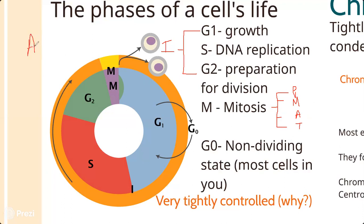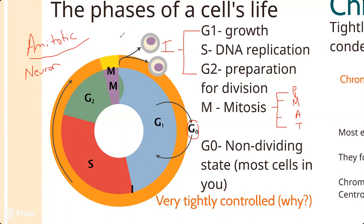Some cells are amitotic - meaning they don't do mitosis. Amitotic cells exit the cell cycle and remain in what we call the G0 (G-naught) phase, a non-dividing state. These cells hang out in an interphase-like state doing what they need to do. An example of an amitotic cell is a neuron - neurons coordinate your nervous system and do not spend time going through cell division.